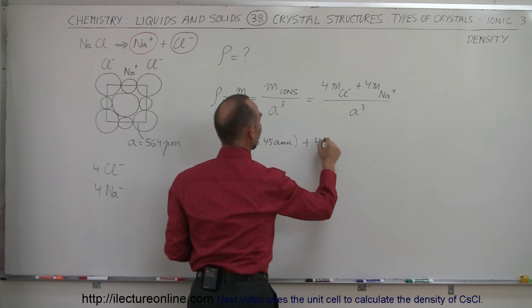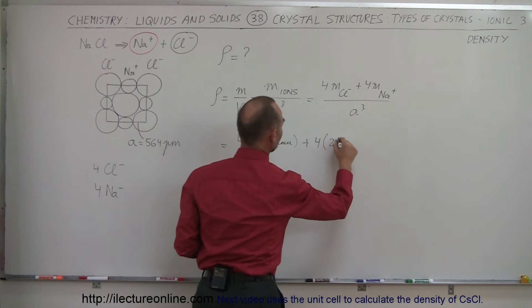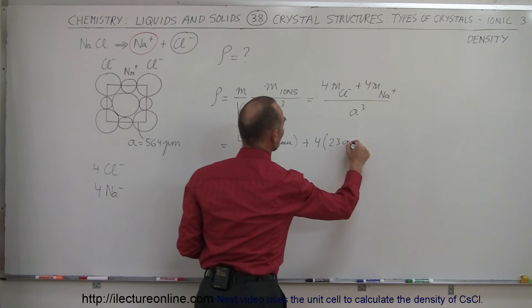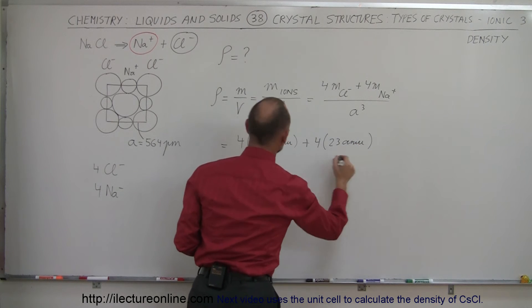Plus four times, four times, and we'll just round it off to 23 AMUs for sodium ion.